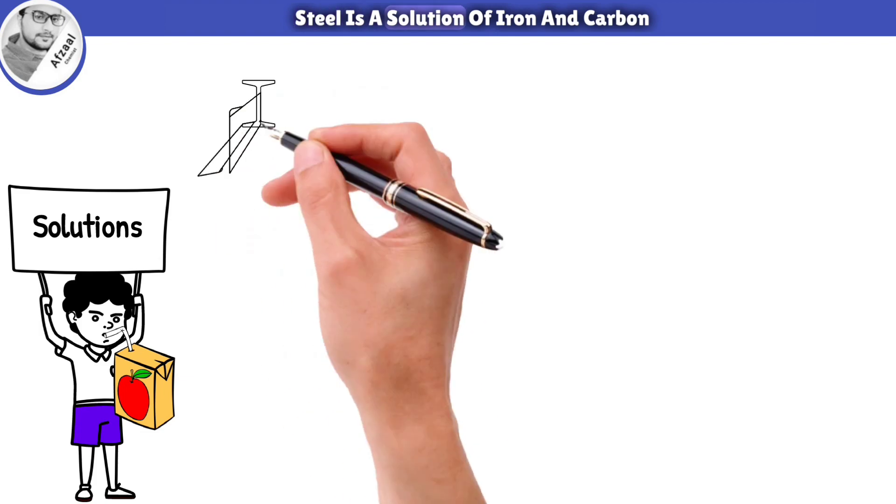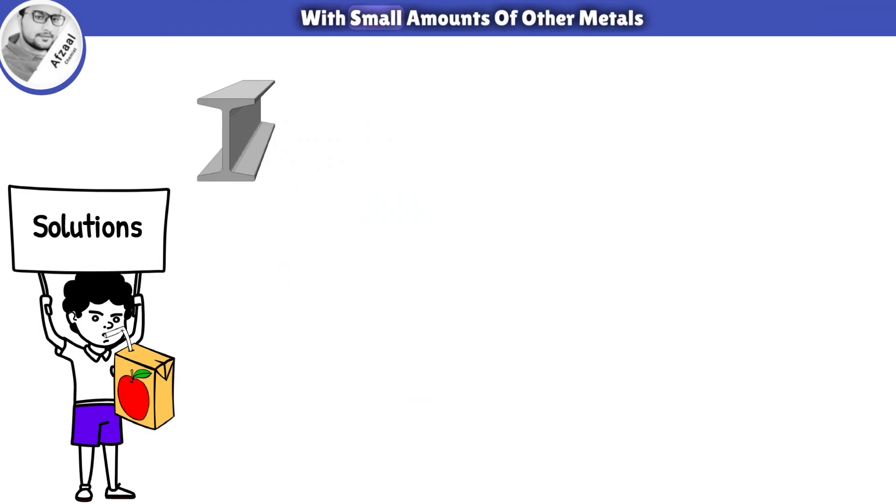Steel is a solution of iron and carbon with small amounts of other metals. It is a solution because the metals are melted together and form a solid alloy that has the same composition throughout.